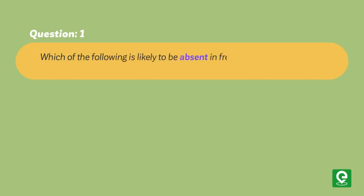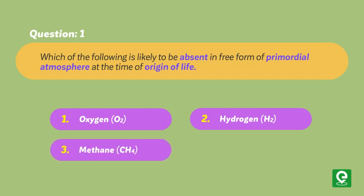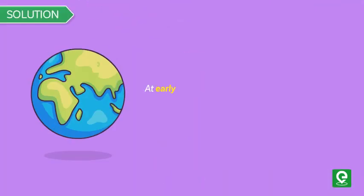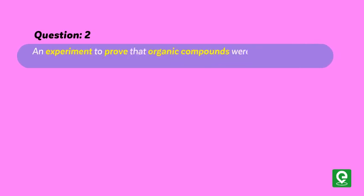Question one: Which of the following is likely to be absent in free form in the primordial atmosphere at the time of origin of life? (1) Oxygen (O₂), (2) Hydrogen (H₂), (3) Methane (CH₄), or (4) Ammonia (NH₃). This question was asked in Delhi PMT 2013. Solution: At the early stages of Earth, the atmosphere was reducing because oxygen was not present in free form — it was present as water vapor. Hence, option one is correct.